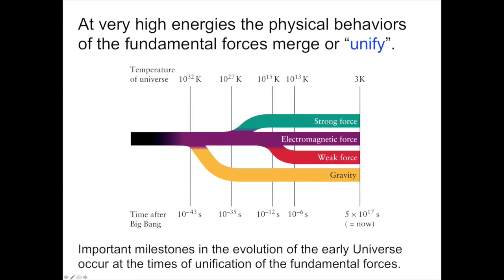This diagram that I'm going to show, which looks like a tree, shows the division of all the forces of nature. In the present day, here we are at the extreme right of the diagram, the temperature of the universe is about three degrees Kelvin, three degrees above absolute zero. We live in a universe in which there is gravity, the electromagnetic force, and the strong and weak nuclear force. But this was not always the case.